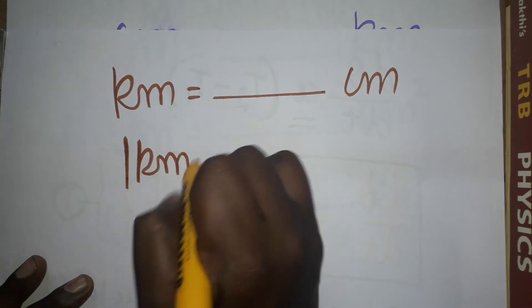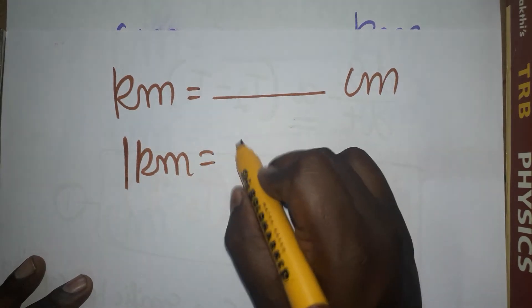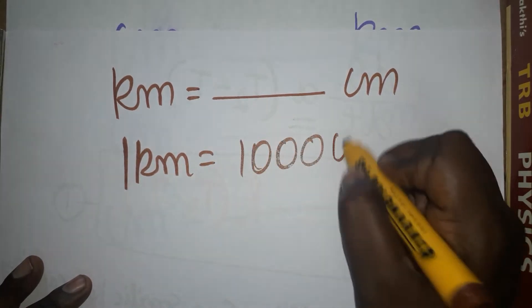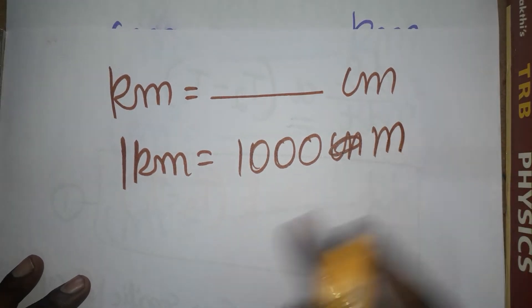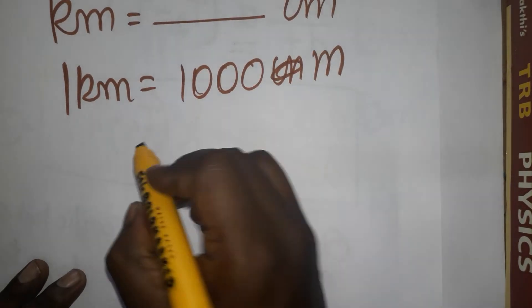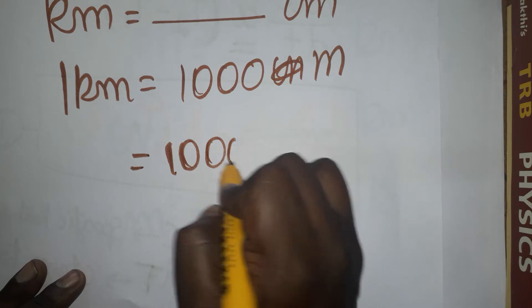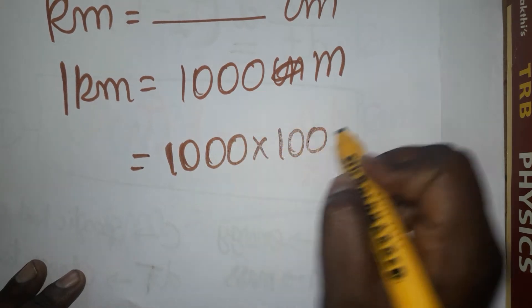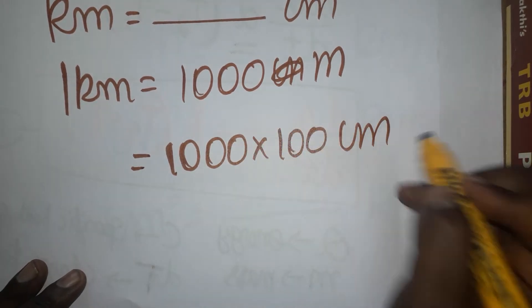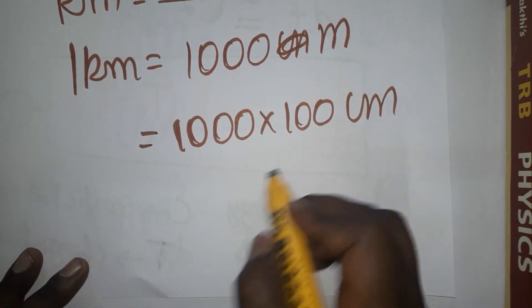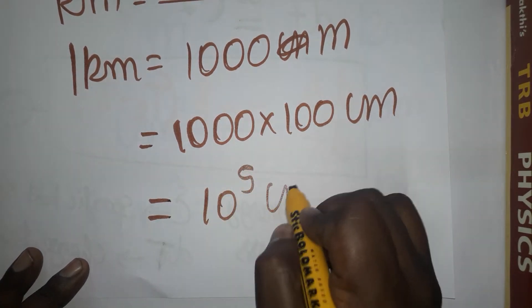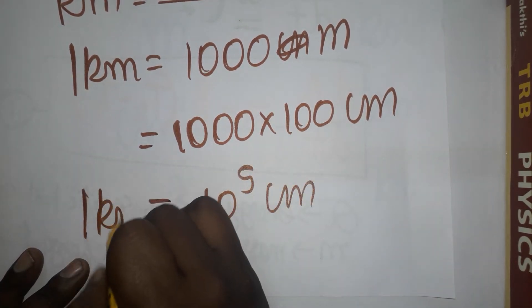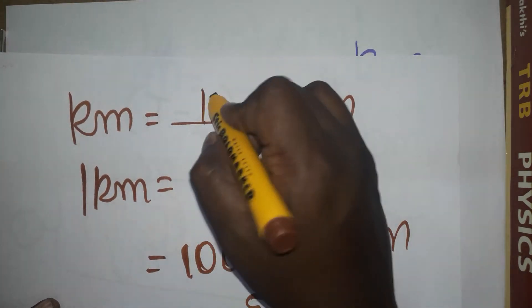One kilometer is one thousand meters. One meter is one hundred centimeters. So one thousand into one hundred centimeters — totally five zeros we will get. So one kilometer equals ten power five centimeter, that is 10⁺⁵ centimeter.